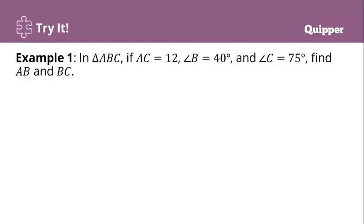Let's look at the examples. For the first example, in triangle ABC, if side AC is equal to 12, angle B is equal to 40 degrees, and angle C is equal to 75 degrees, find sides AB and BC.